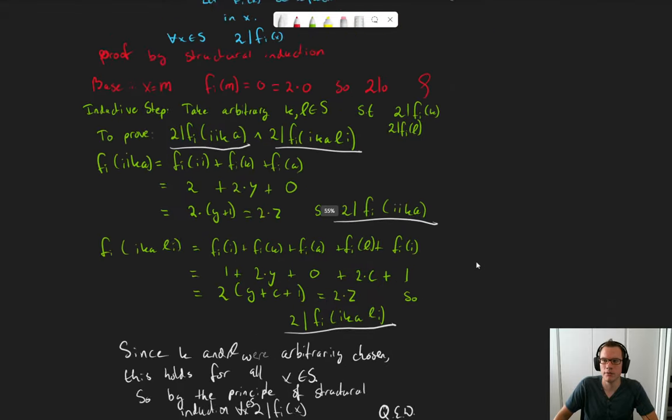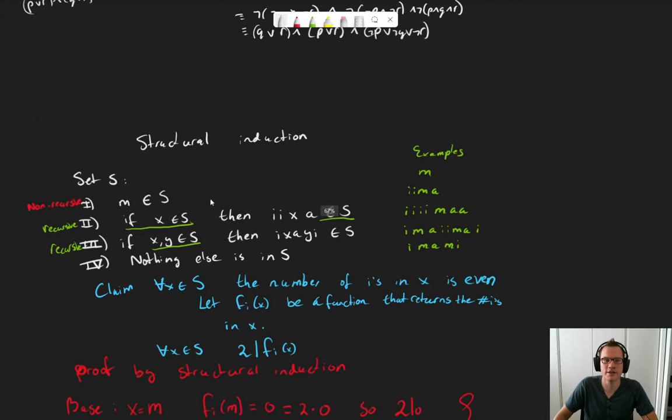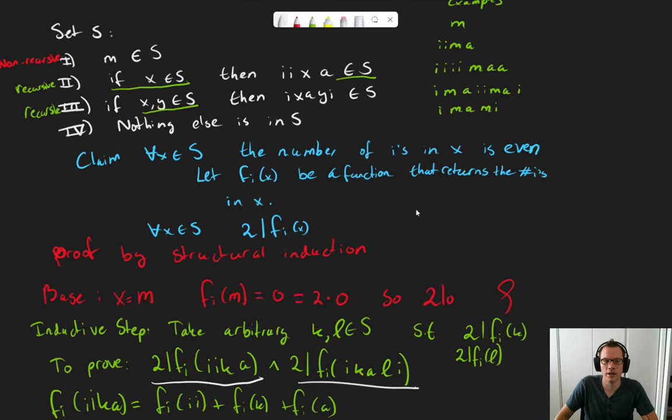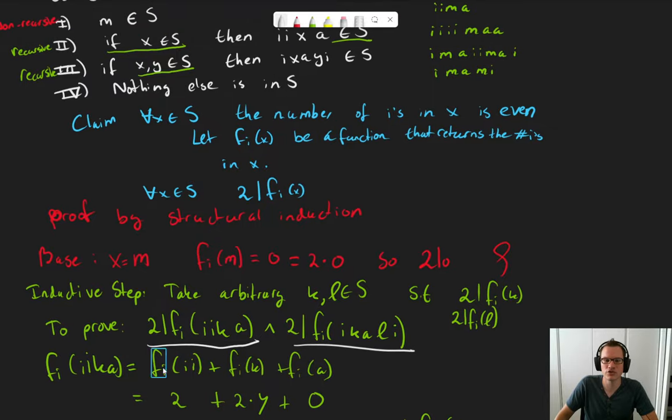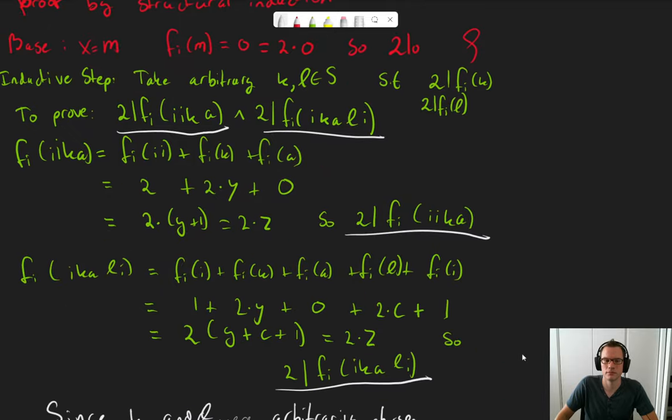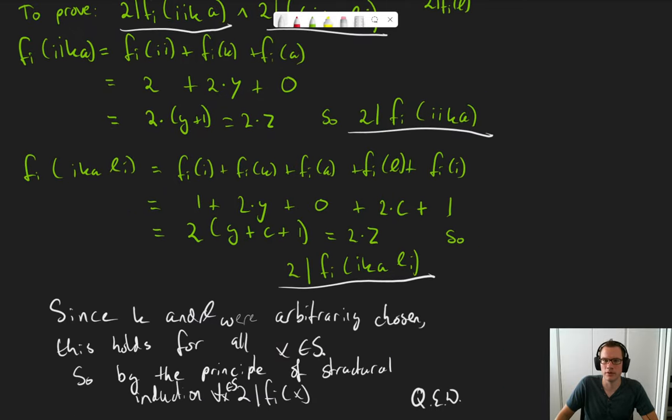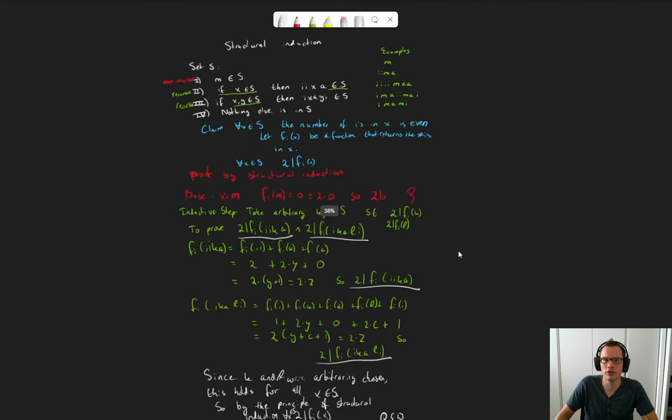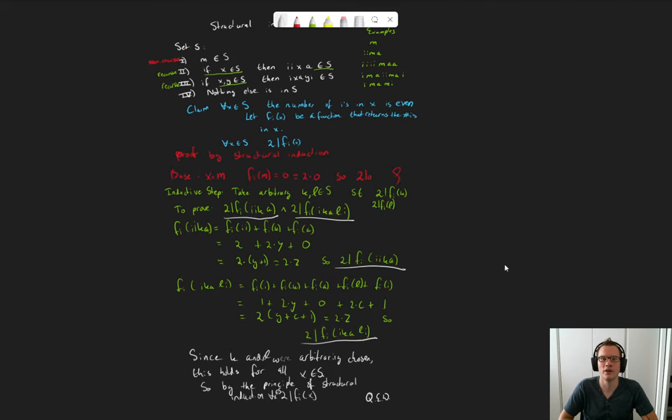So, what did we do? Well, when confronted with our recursively defined set S, we use structural induction to prove a claim about all the elements in S. We used the non-recursive rules in our base case. And we used the recursive rules in our inductive case. Since we needed two elements, we introduced two arbitrary elements. And then we showed that each of these rules preserves the property. And then we ended the proof writing some English. That's it for our first example of structural induction. I will see you around in the next video. Bye for now.